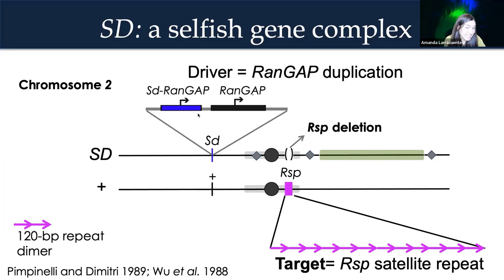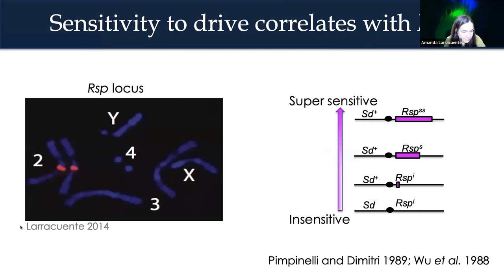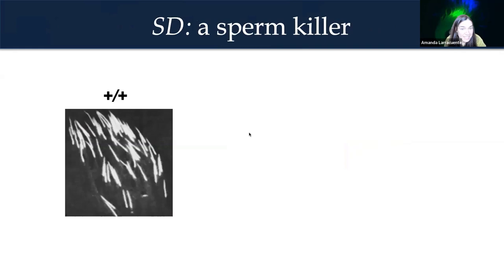We do know the molecular identity of the driver and of the target. The driver is a partial tandem duplication of a gene called RAN-GTPase activating protein, or RAN-GAP. This truncated duplicated gene encodes a protein with wild type enzymatic activity, but it's missing sites important for its localization in the cell, so it ends up in the nucleus instead of the cytoplasm — a localization phenotype we think is important for drive. The target is not a gene. It's a block of satellite repeats called responder, or RSP — a dimer of two closely related 120 base pair repeats, tandemly repeated in the pericentric heterochromatin. The abundance or copy number of responder correlates with sensitivity to drive: large alleles with many copies are super sensitive, while small alleles with fewer copies can escape drive.